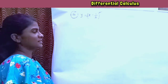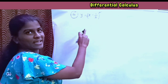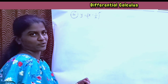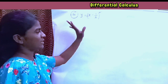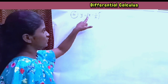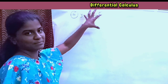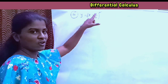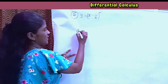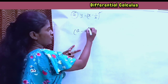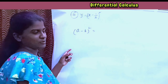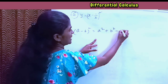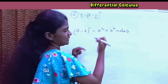Next problem: y is equal to x minus 1 by x, the whole square. How do we differentiate this? We use the algebraic identity for a minus b whole square: a minus b whole square equals a square plus b square minus 2ab. We expand first before differentiating.